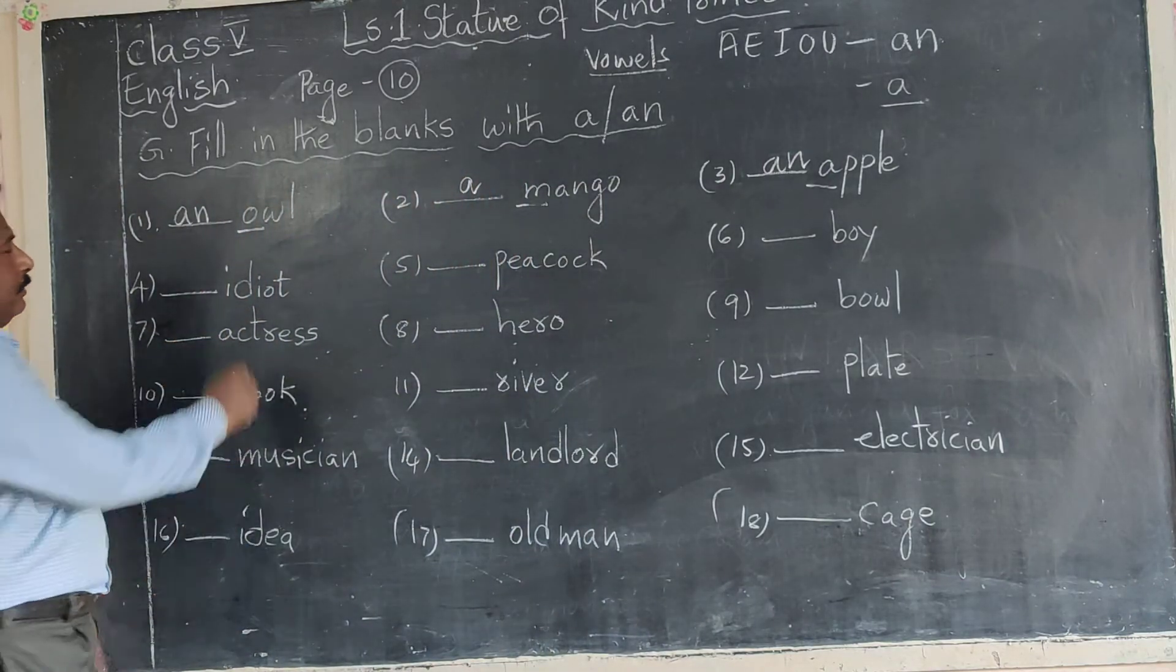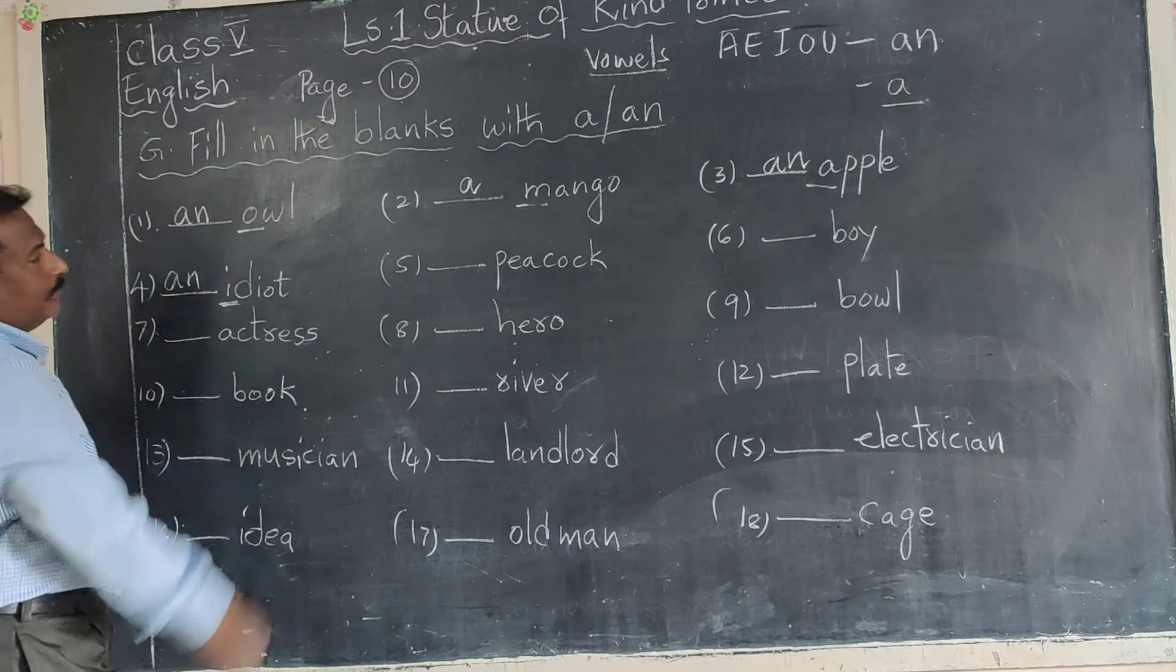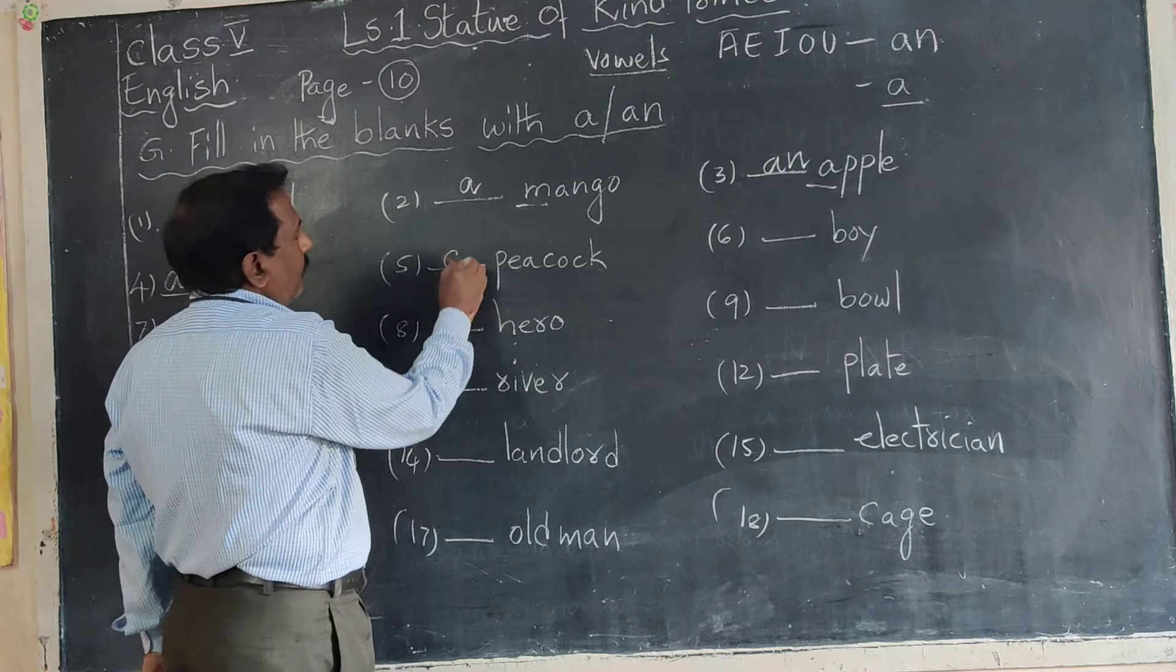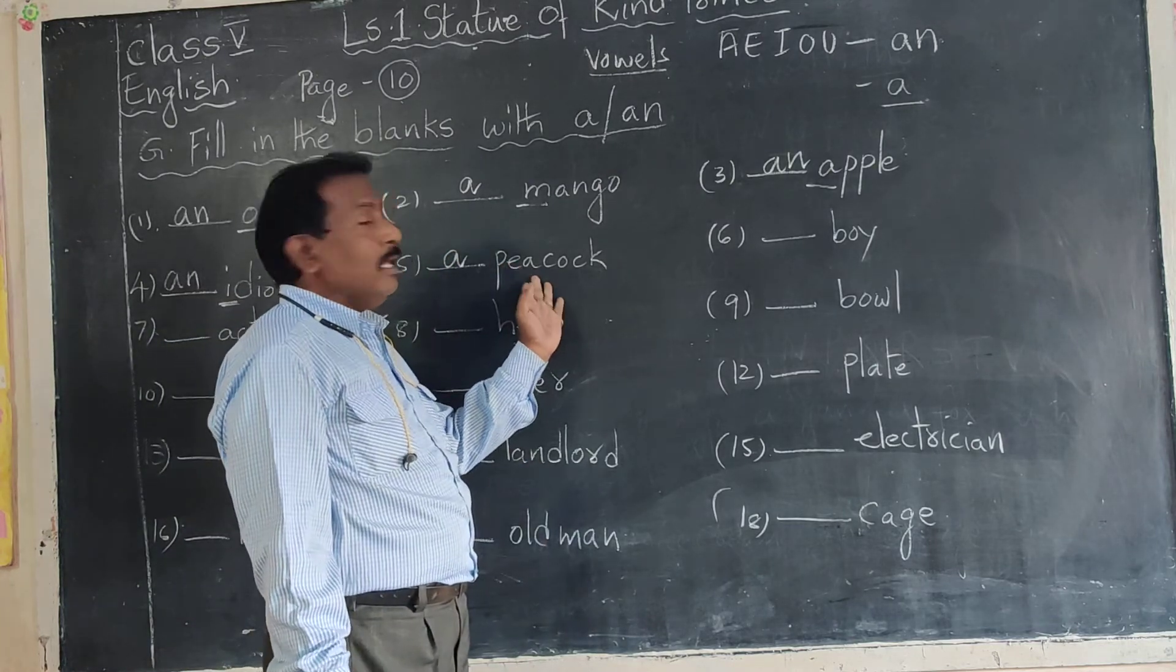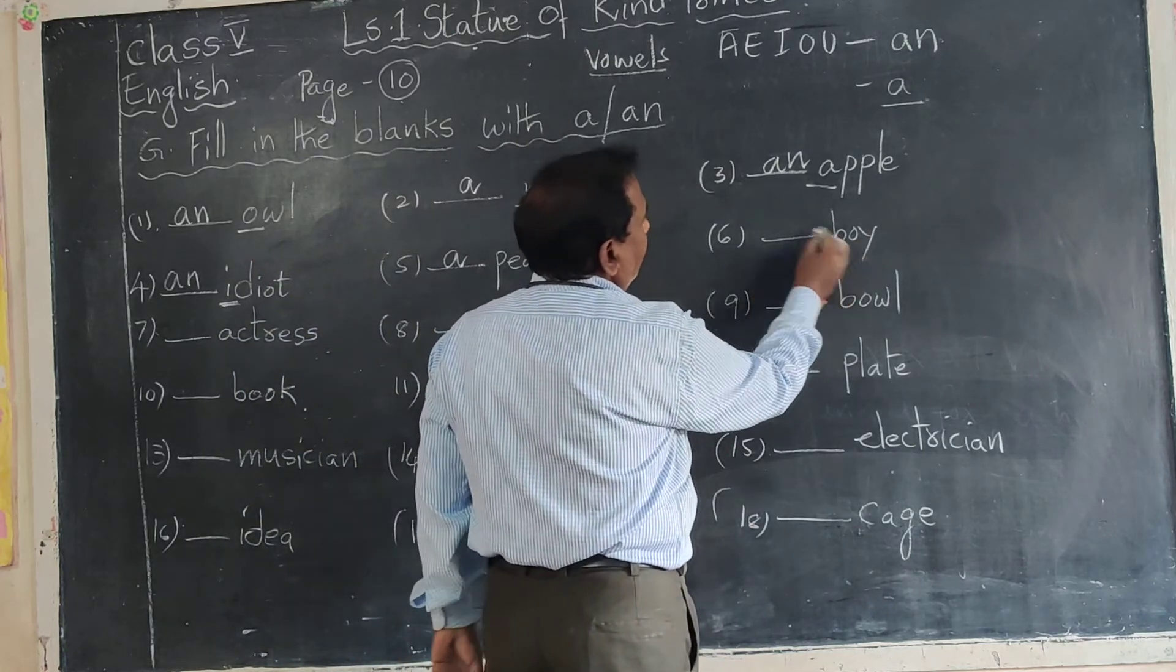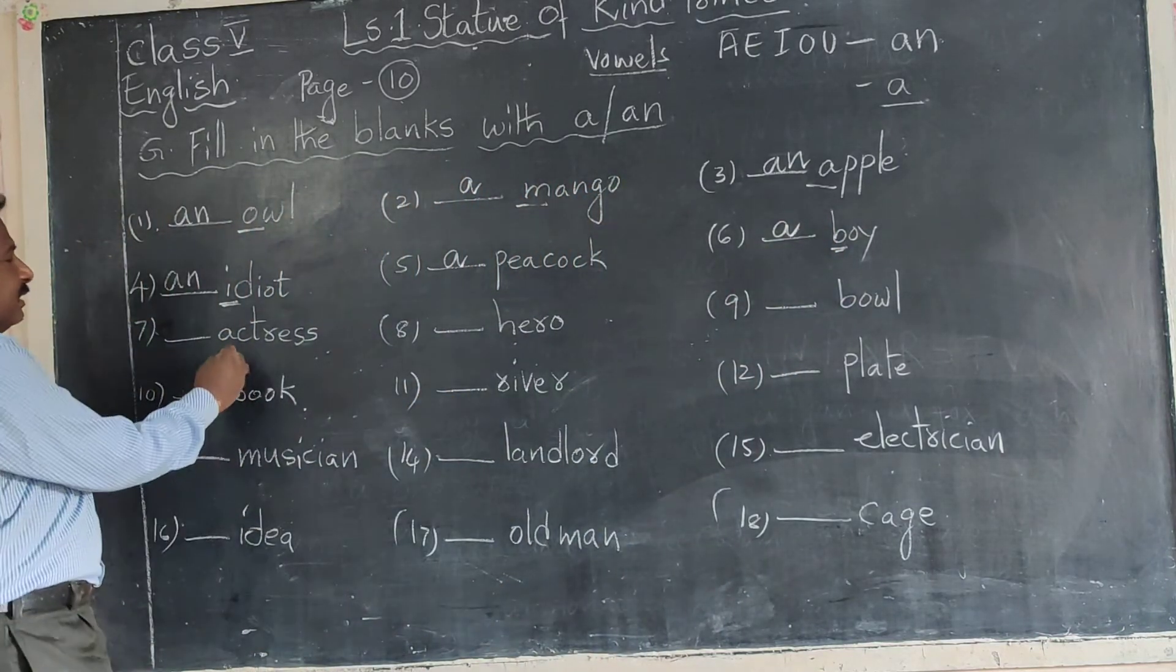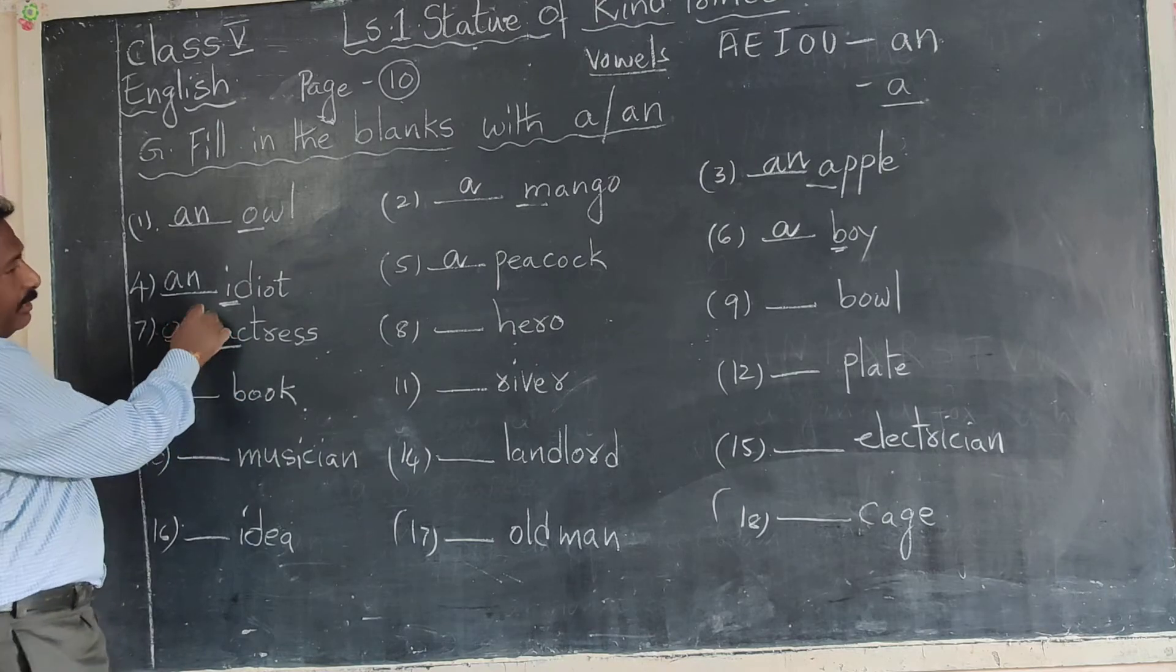Idiot - starting with vowel I, we say an idiot. Pick up - P is consonant, a pick up. And also singular nouns. Boy - consonant, a boy. Actress - A is vowel, so we say an actress.